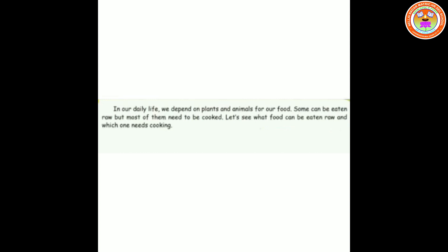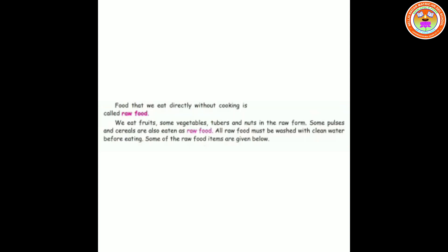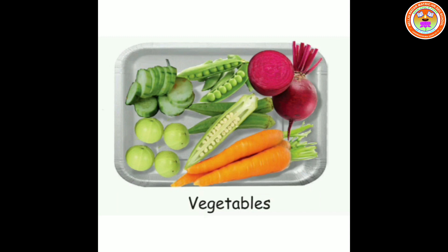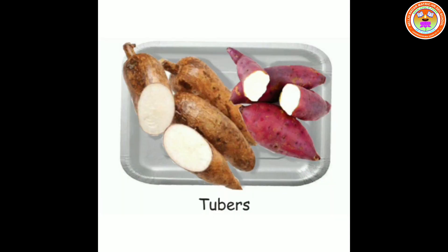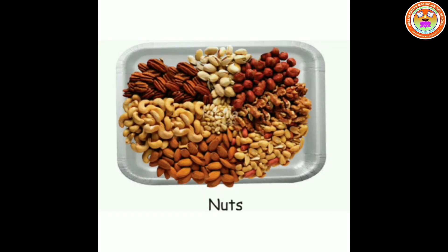Let's see what food can be eaten raw and which ones need cooking. First: raw food, which means uncooked food. Food that we eat directly without cooking is called raw food. We eat fruits, some vegetables, tubers, and nuts in the raw form. Some pulses and cereals are also eaten as raw food. All raw food must be washed with clean water before eating. Now let's see the pictures of raw food: fruits, vegetables, tubers, and nuts.